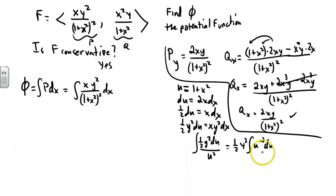When you integrate u to negative 2, you get u to negative 1 over negative 1 with all these constants here. Finally, we'll call it 1 over u, so y squared, negative y squared over 2u. So it equals negative y squared over 2 times the quantity 1 plus x squared, perhaps plus some function of y only.